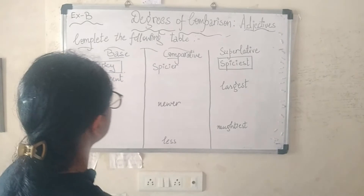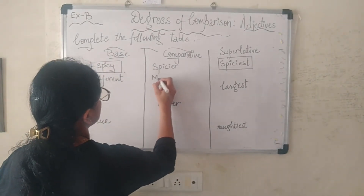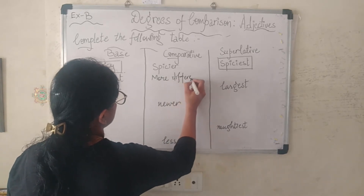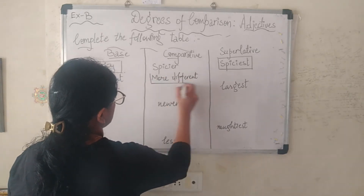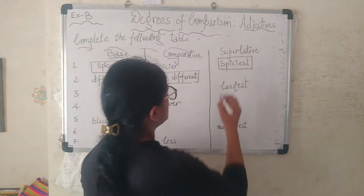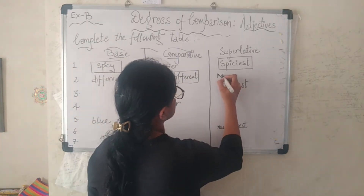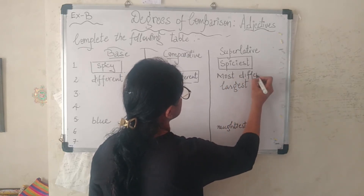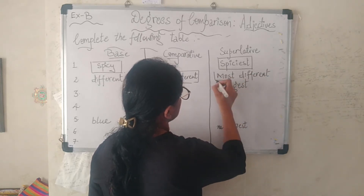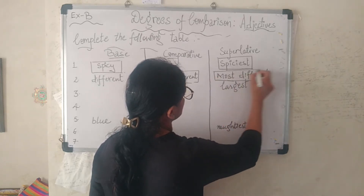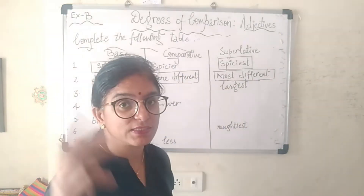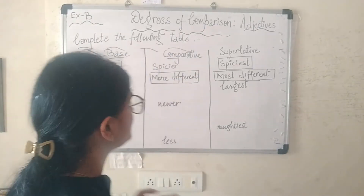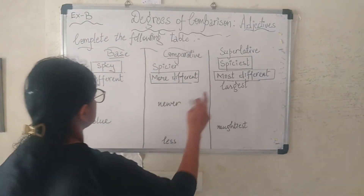The second adjective is 'different'. The comparative is 'more different' and the superlative is 'most different'. When a word has more than one syllable — two or three syllables — we cannot add '-er' or '-est'; we have to write 'more' or 'most' instead.